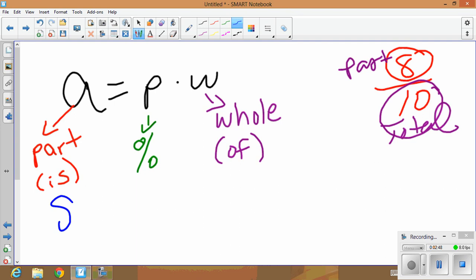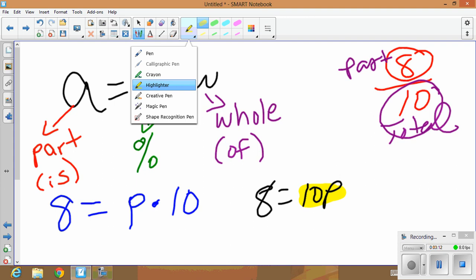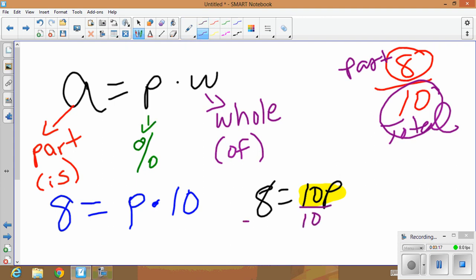So 8 is our part, so that's going to be our a. We don't know the percent, so I'm going to put a p times the whole. The whole is 10. So what we have here is 8 is equal to 10p. Well, how do I undo this multiplication here? How do I undo times? Well, the opposite of multiplying is dividing, so we're going to divide both sides by 10 because we want to isolate the variable.